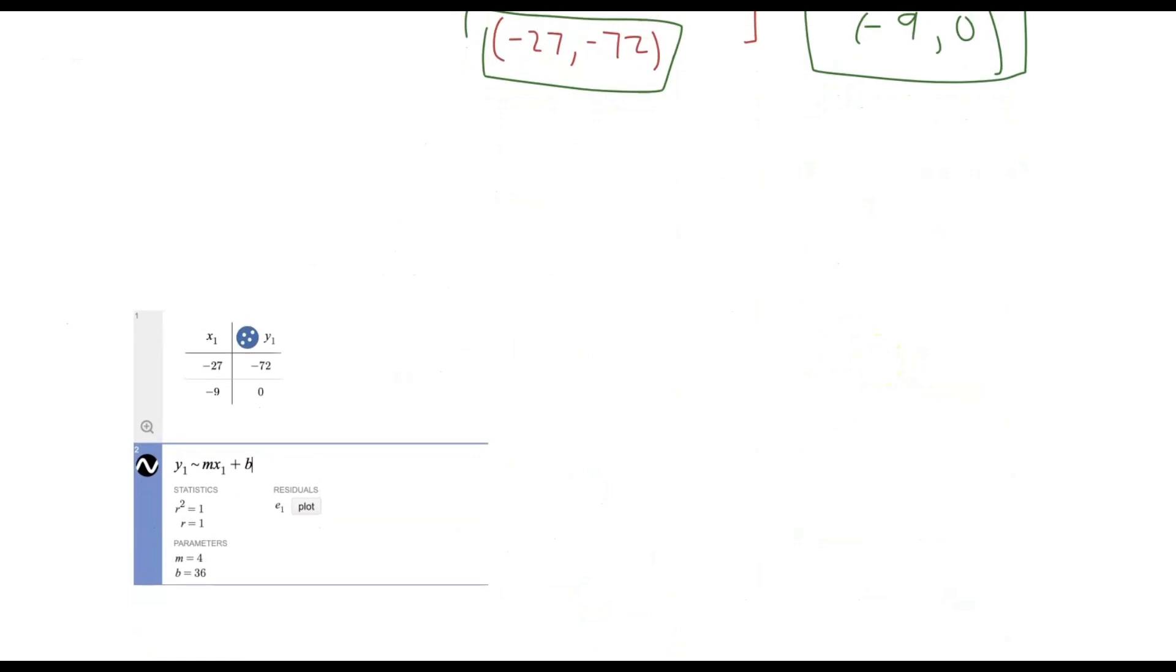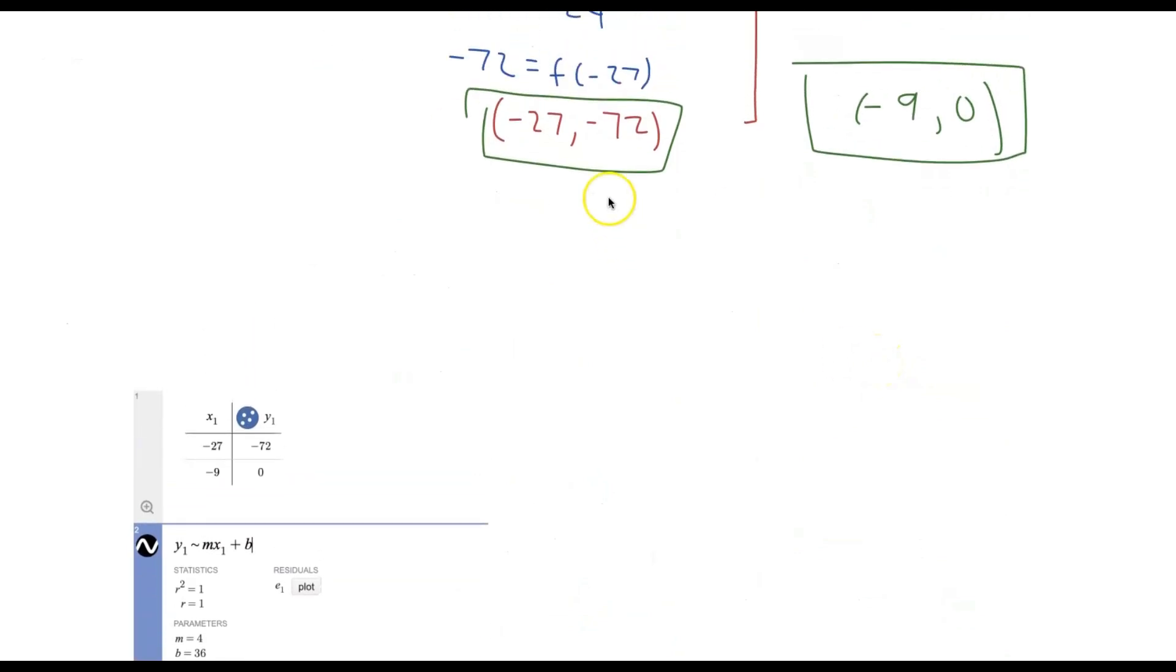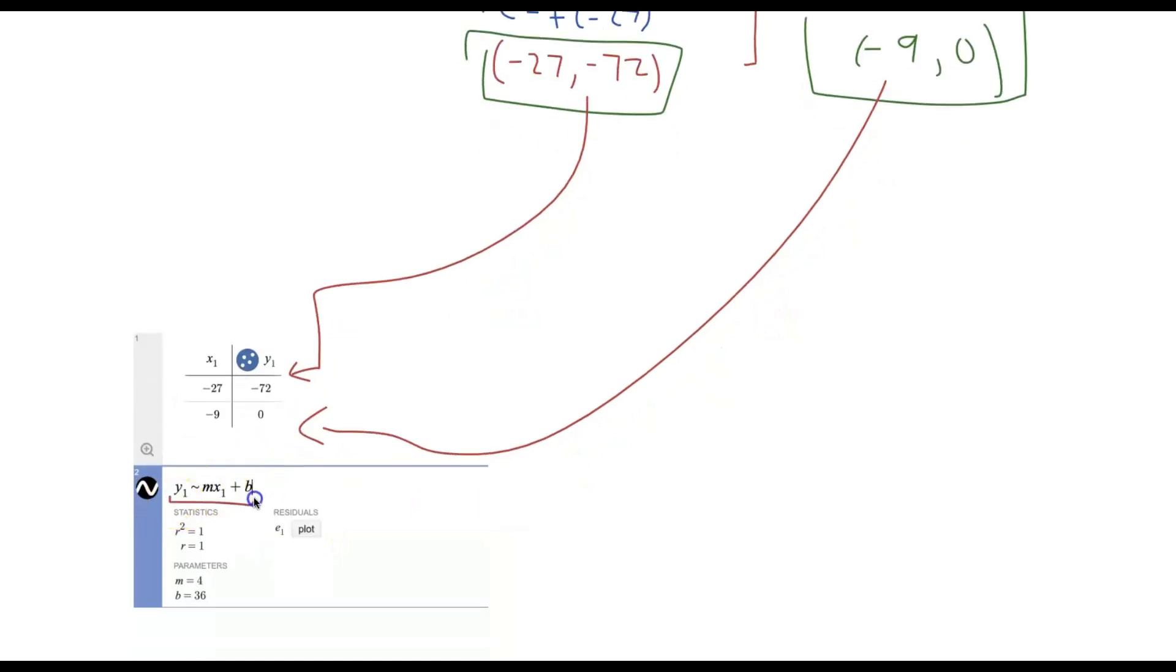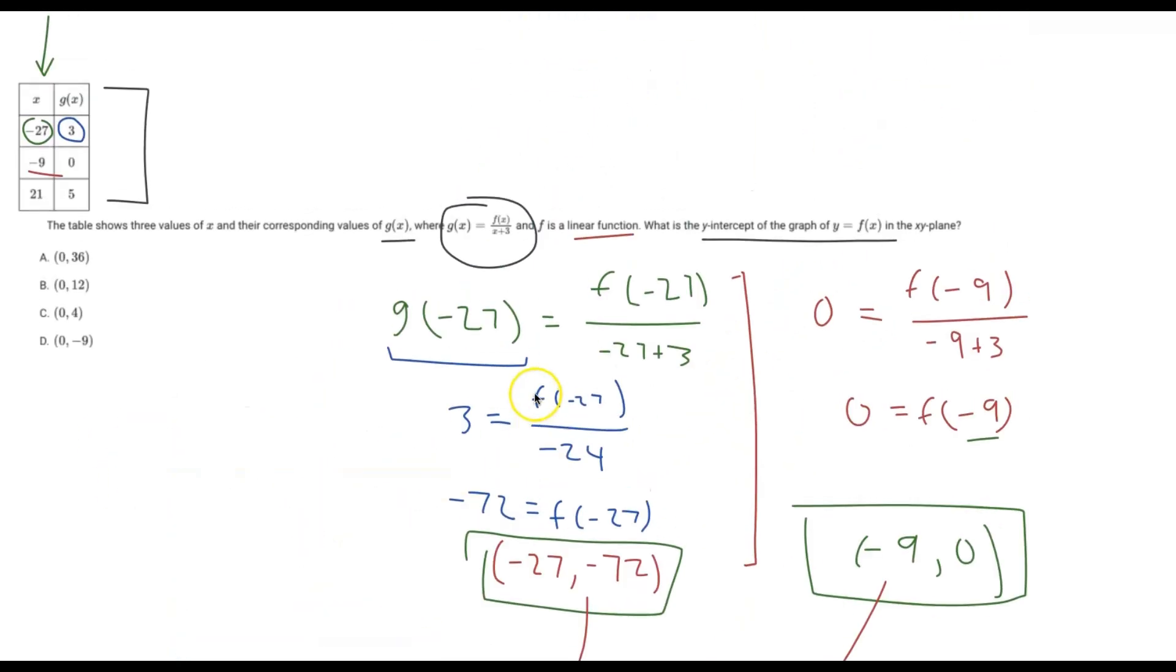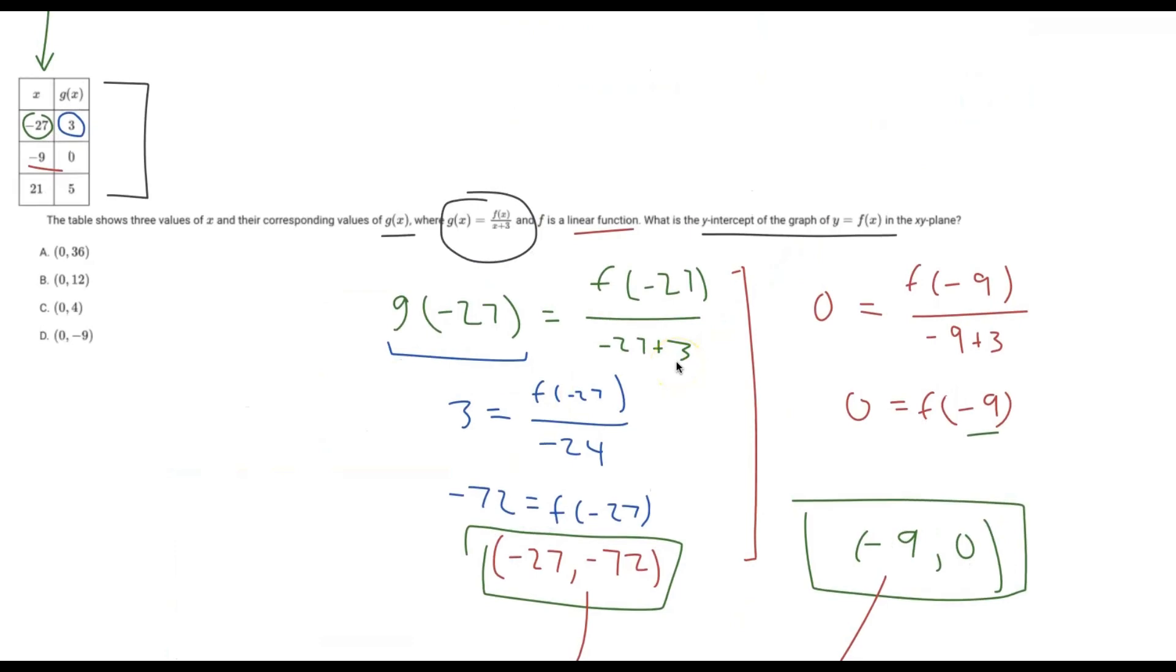So if we scroll down, you can see here what I did is I created a table with these two coordinate points. So negative 27, negative 72, and then negative 9, 0. I just plugged it into a table, and then I set up a regression here, a linear regression, because they told us f of x is a linear function.